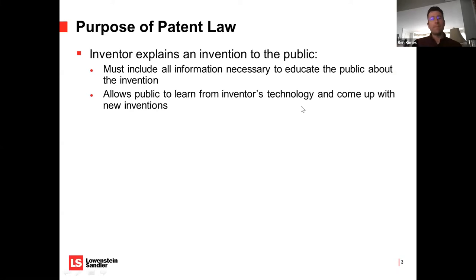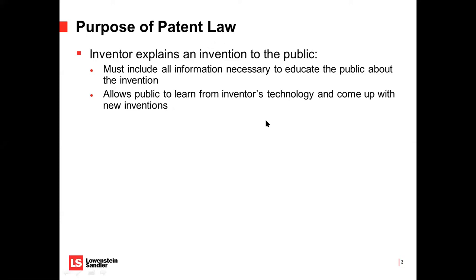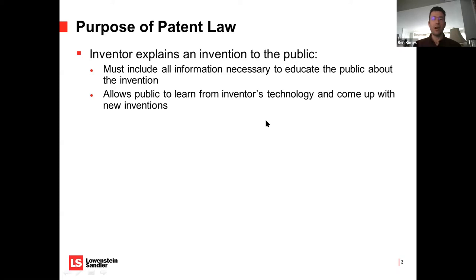What's the purpose of patent law? Patent law gives an inventor an exclusive right to some technology. In exchange for that exclusive right, the inventor is teaching the country how to practice that invention. The application has to include all of the information necessary to educate the public about that invention — it has to be enabling, so someone can read it and practice the invention without too much experimentation.